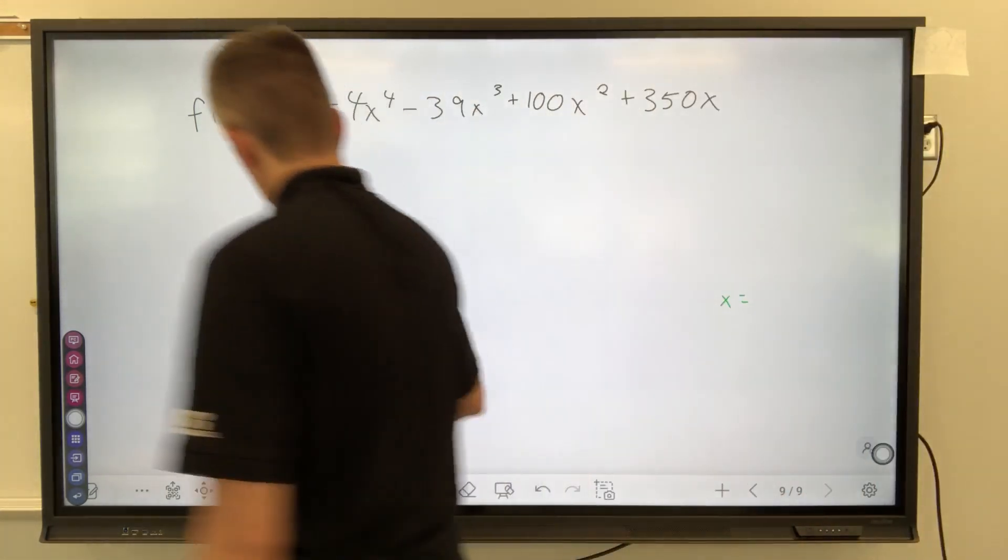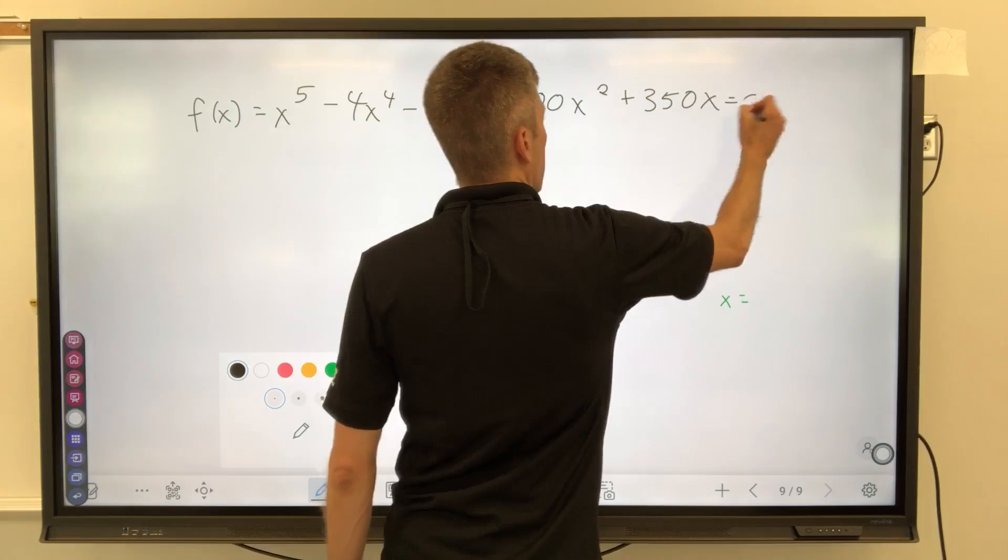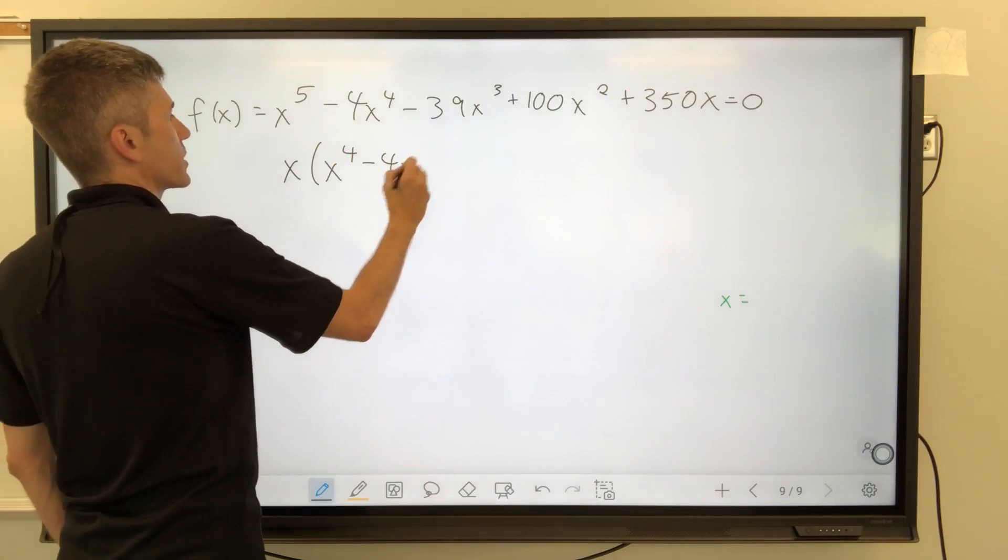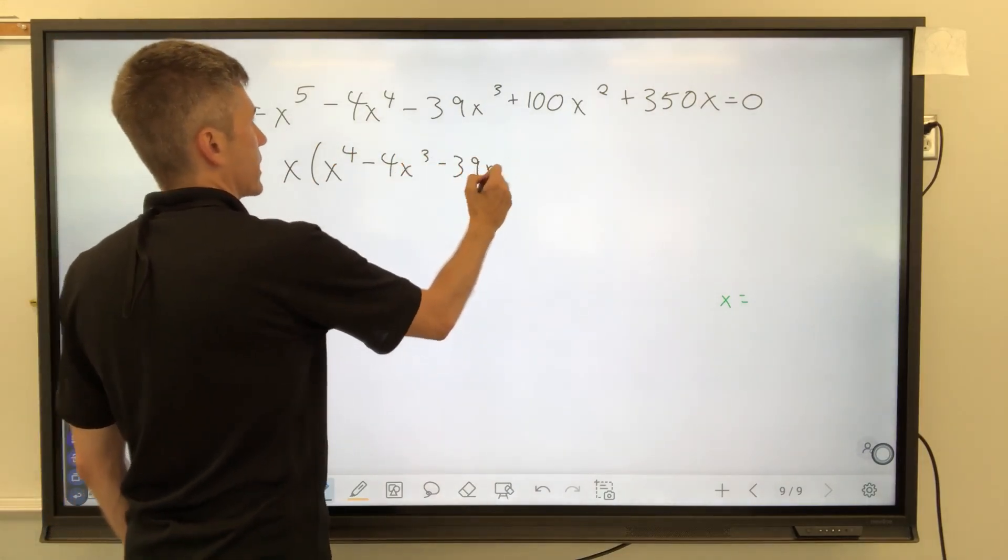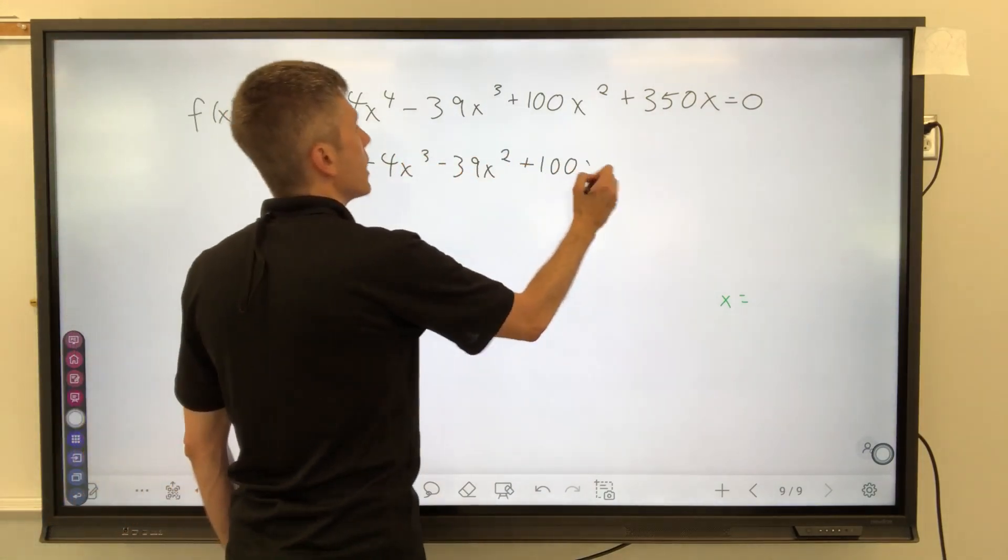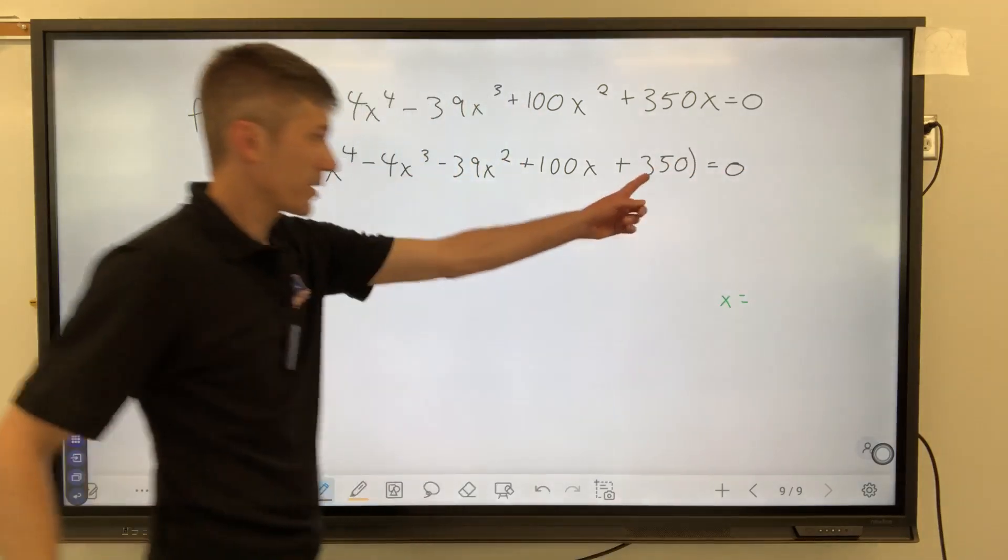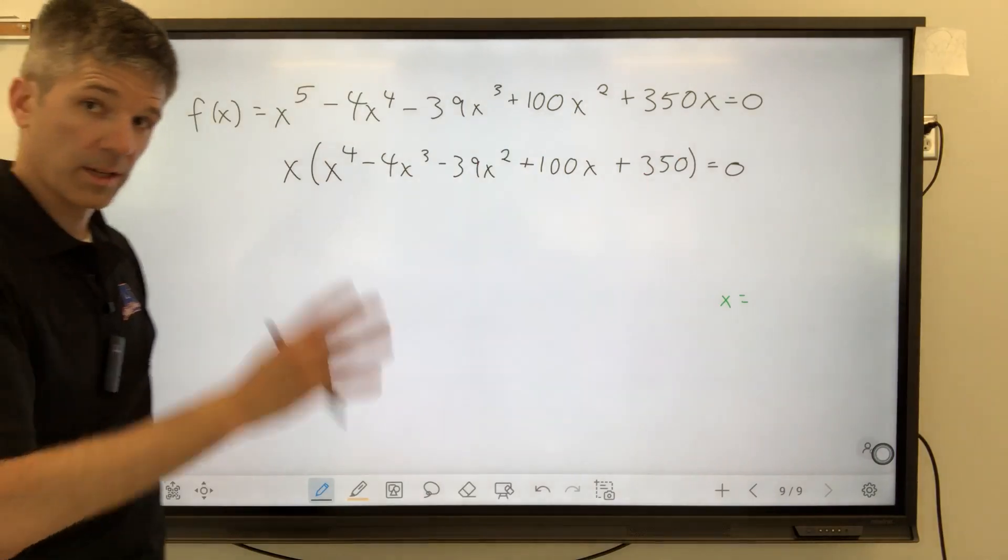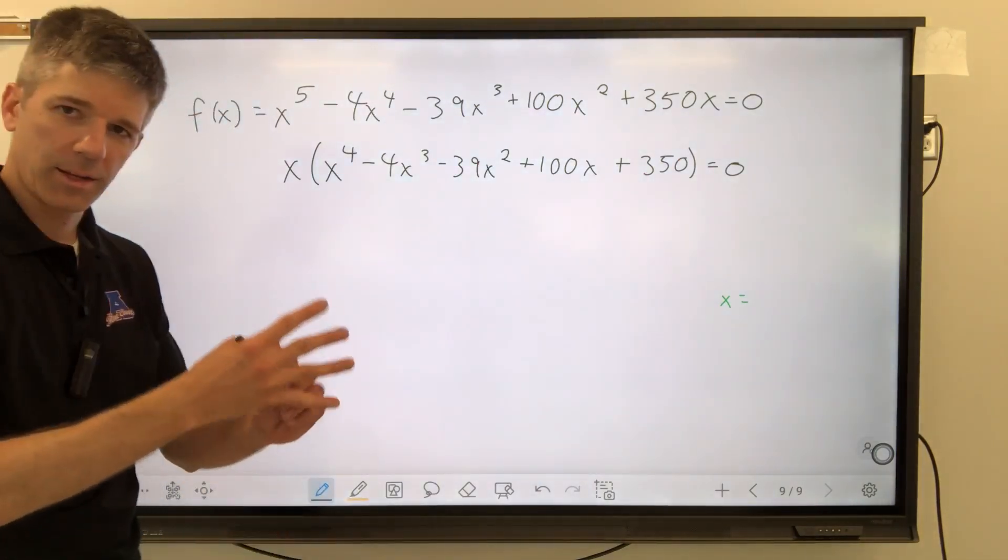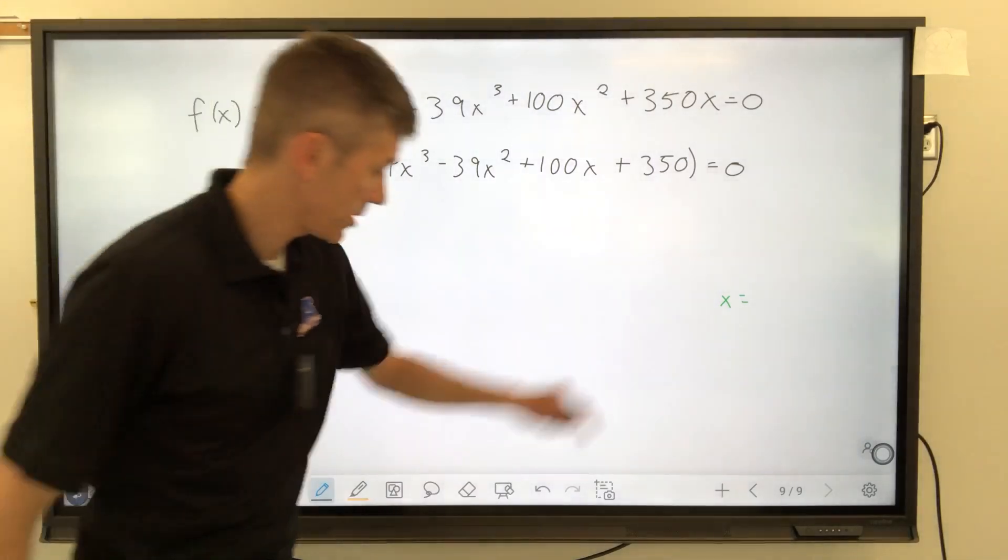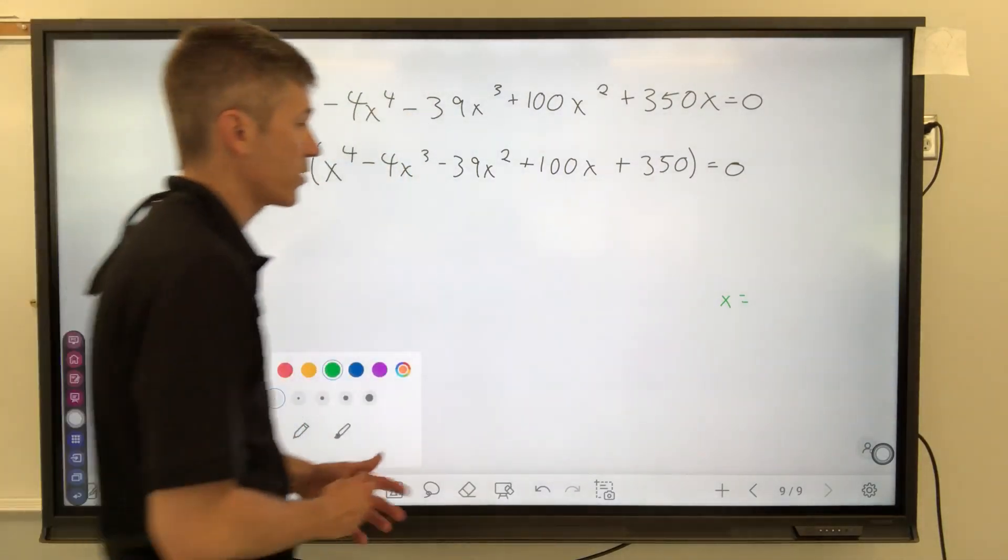So what we're going to do is take the original function and set it equal to zero. We could say, well, let's just factor an x out, and that gives me x to the fourth minus 4x cubed minus 39x squared plus 100x plus 350 equals zero, and now we're left with this big bad quartic. But I do know that x equals zero, so from the very beginning, I have one of my five solutions.